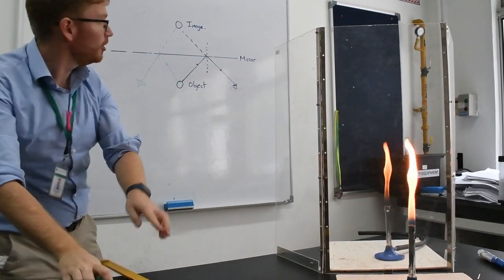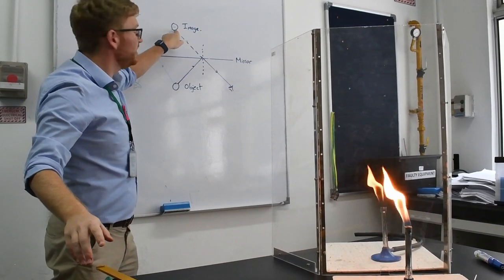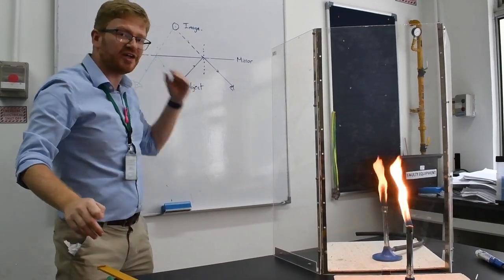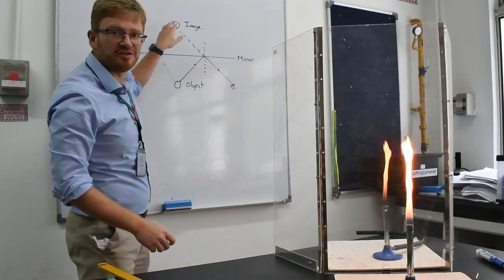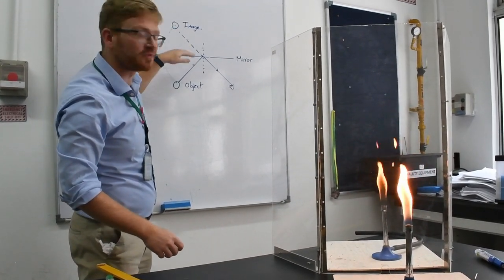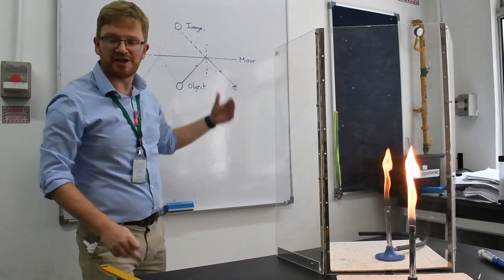And look at that. Both the green line and the blue line, they meet at the same point. And that's the fundamental point about how images work. Images always appear in the same place inside the mirror or inside a lens.